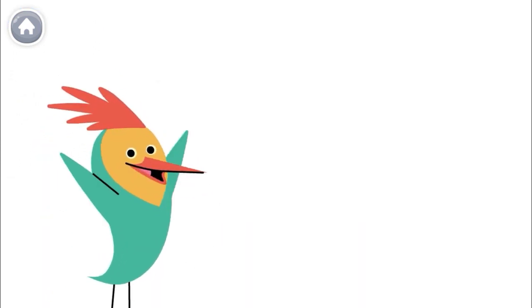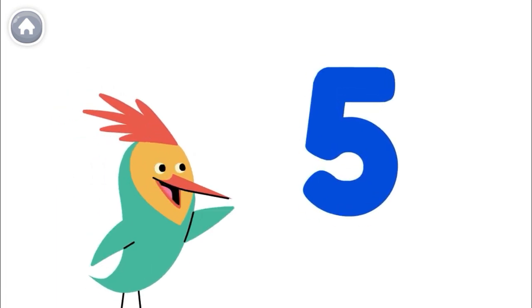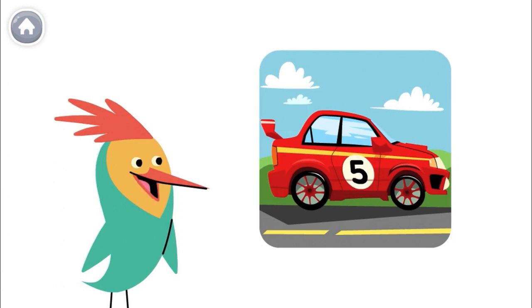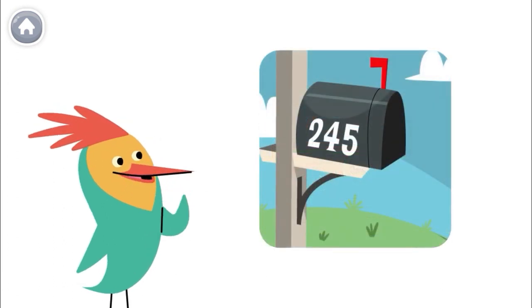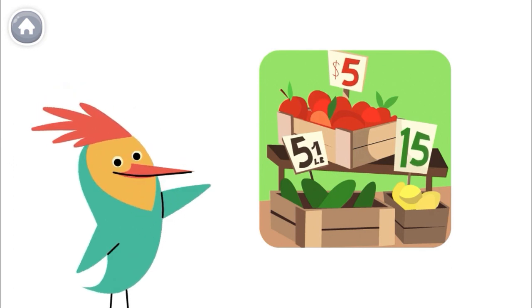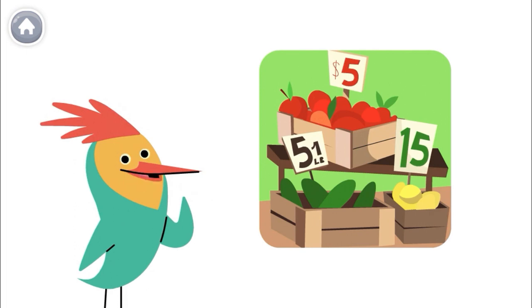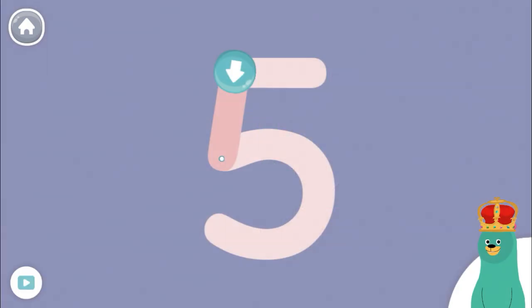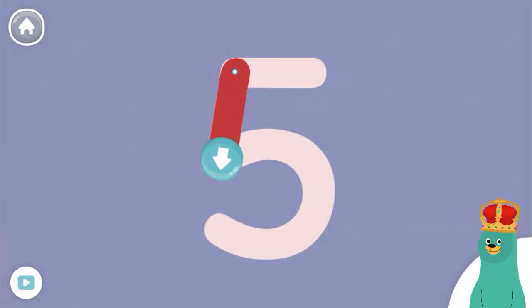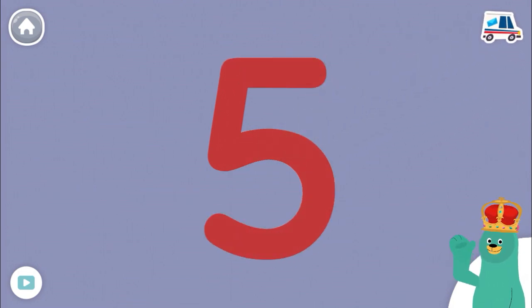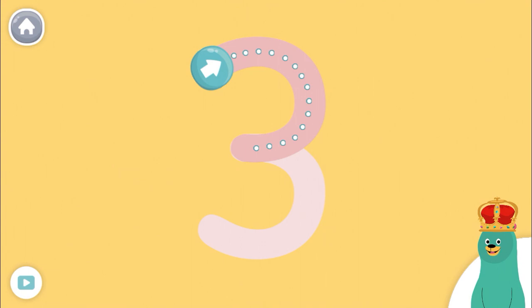Numbers are everywhere in our world. This is the number 5, and this is how you write the number 5. Here's a number 5. Here's a number 5. Here's a number 5. Look around to see if you can find the number 5. Trace the number 5. That's right! Now try tracing the number 3.